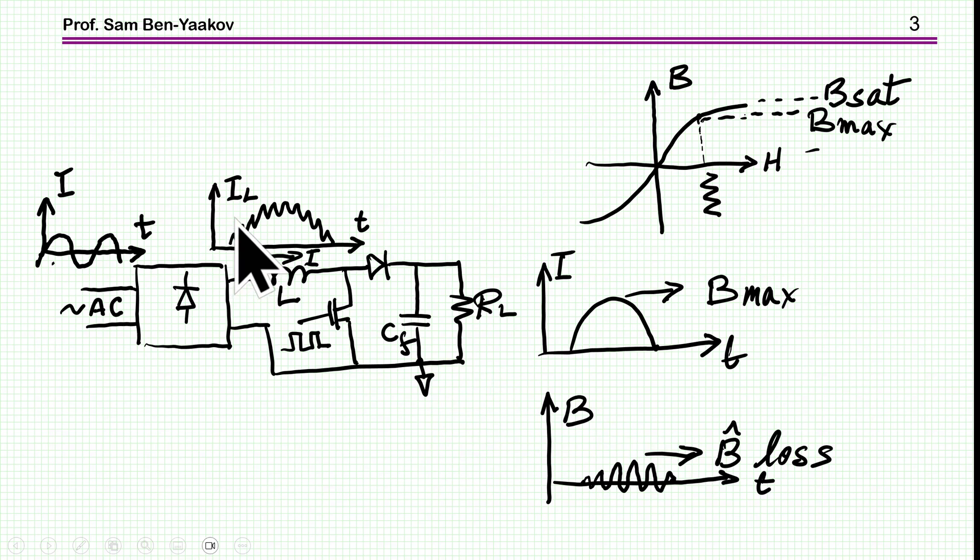But there is another issue which is very important when working at high frequency. We have a ripple of the current due to the operation of the boost at high frequency. This ripple is causing a ripple in the magnetic flux density, and this is causing losses. We have to make sure that the ripple of the magnetic flux density, averaged over the cycle, is below the level that will cause too high temperature. So we have two independent requirements.